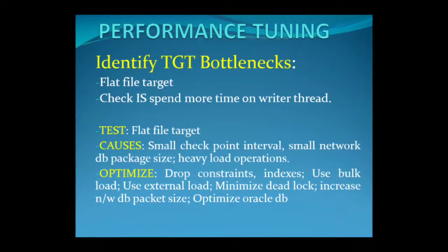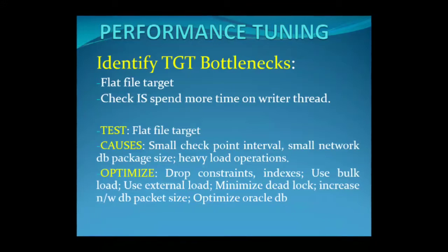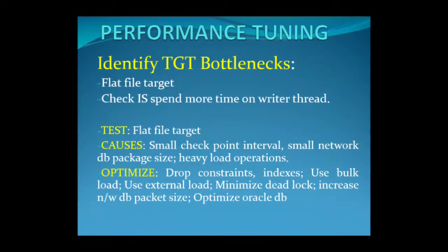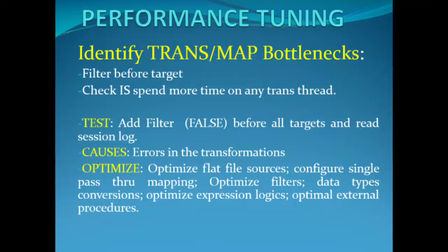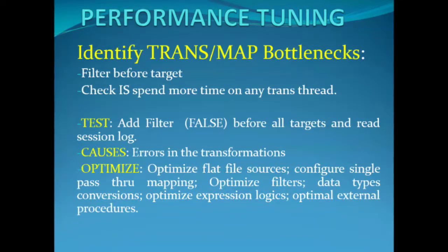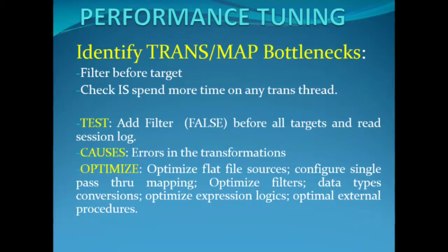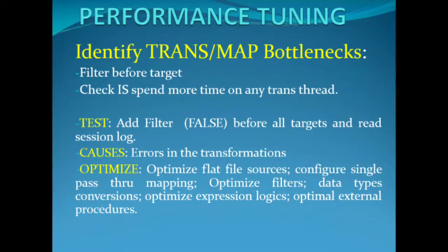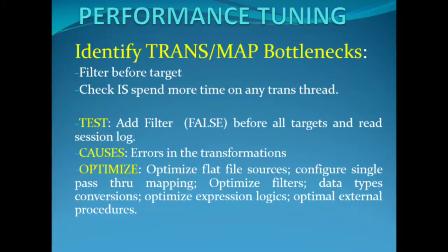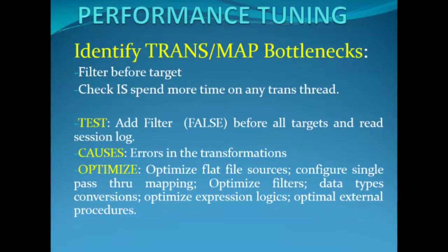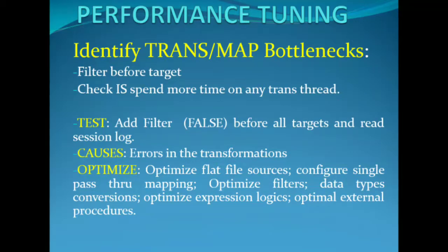To confirm a target bottleneck, configure a flat file as target and run a session — if it takes less time than the DB, there is a target bottleneck. General causes include small checkpoint intervals, small network DB packet size, and problems during heavy load operations when other operations are simultaneously running on the same database table. To optimize the target: drop indexes and constraints before loading, increase checkpoint interval, use bulk loading, use external load, minimize deadlocks, increase DB network packet size, and optimize the target database.